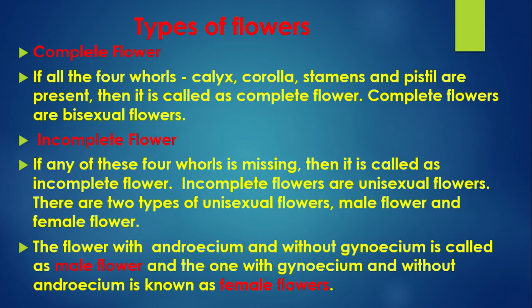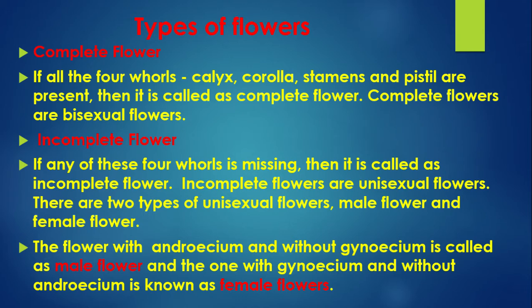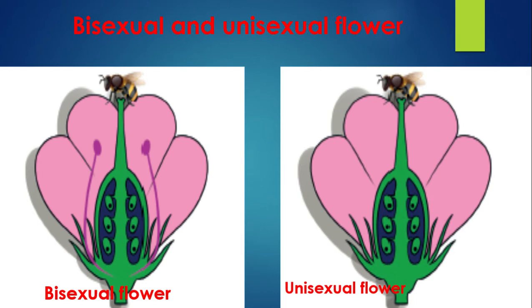Types of flowers: Complete flowers — if all four whorls (calyx, corolla, stamens and pistil) are present, it is called a complete flower, and complete flowers are bisexual flowers. Incomplete flowers — if any of these four whorls is missing, it is called an incomplete flower; incomplete flowers are unisexual flowers. There are two types of unisexual flowers: male flowers (with androecium but without gynoecium) and female flowers (with gynoecium but without androecium). The bisexual flower has both androecium and gynoecium.